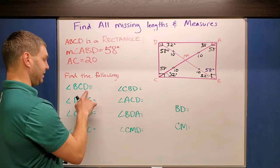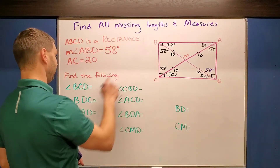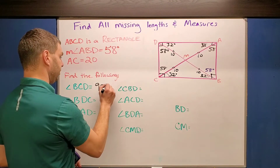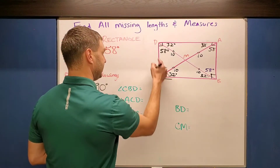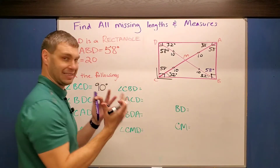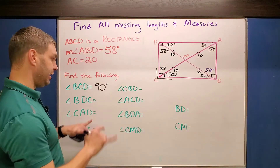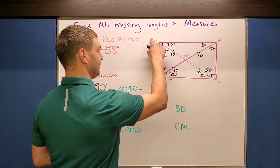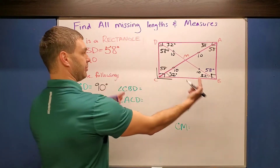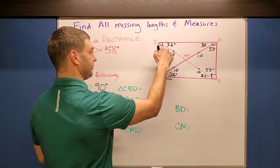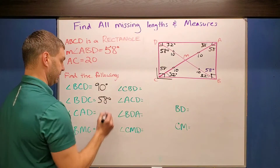Here it says BCD equals what? Well, that's 90 degrees — it's the full right angle corner. Don't get confused: it's not 32, it's not 58. BCD, if you look at the whole thing, is talking about the 90 degrees. Next one: BDC. If I follow this around, it makes that V shape, and in the middle of that V is the 58. That 32 is not included in this one, so this is just 58 degrees. CAD is the same thing but the top one — that is 32 degrees.